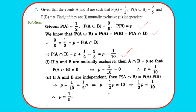If A and B are mutually exclusive, A∩B = ∅, so P(A∩B) = 0, giving p - 1/10 = 0, so p = 1/10. If A and B are independent, P(A∩B) = P(A)×P(B), so p - 1/10 = 1/2 × p, giving p = 1/5. Please pause and note down the solution.